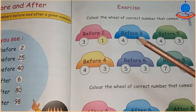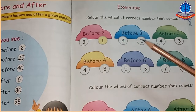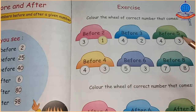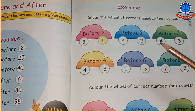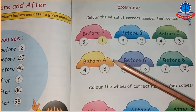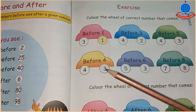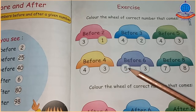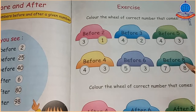Before 3 — 3 से पहले क्या आता है? 2 आता है, इसलिए हम 2 के circle में color करेंगे। Before 5 — 5 से पहले क्या आता है? 4 आता है, इसलिए 4 के circle में color करेंगे। Before 4 — 4 से पहले क्या आता है? 3 आता है, इसलिए 3 के circle में color करेंगे। Before 6 — 6 से पहले 5 आता है, 5 के circle में color करेंगे। Before 8 — 8 से पहले 7 आता है, 7 के circle में color करेंगे।